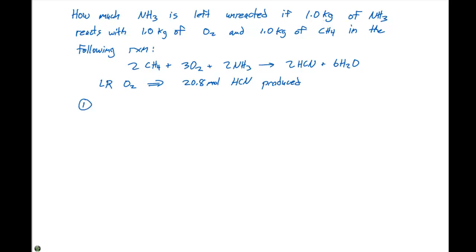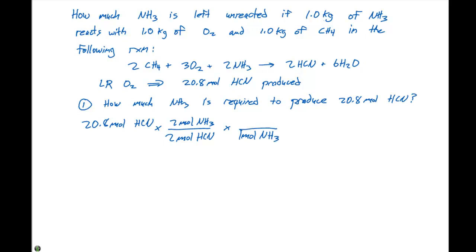The first step is we want to know how much NH3 is required to produce 20.8 moles of HCN. We're going to start with 20.8 moles of HCN, and we know from our balanced chemical equation that for every two moles of HCN, we have two moles of NH3. We need to convert the moles of NH3 to grams of NH3, so one mole of NH3 is 17.0 grams of NH3. When we do the conversion and the math, we get 354 grams of NH3.